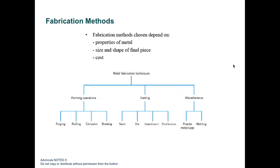How are steel and alloys made? Fabrication methods depend on the properties of the metal, the final shape and size, and cost. Metal fabrication techniques can be classified into forming operations, casting, and other types. Forming operations include forging, rolling, extrusion, and drawing. Casting can be based on sand, die, or continuous methods. They can also be classified by powder methodology or welding.